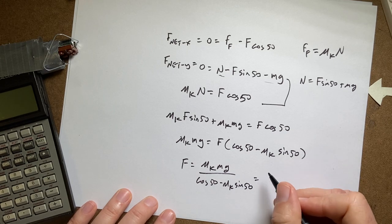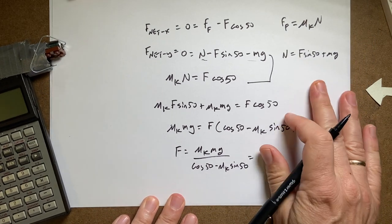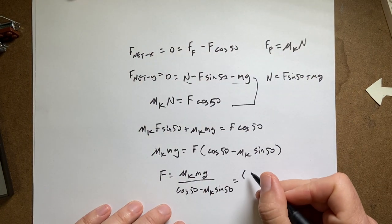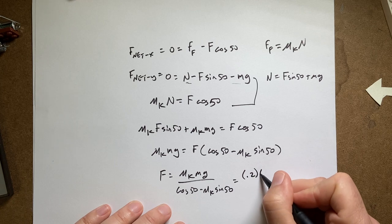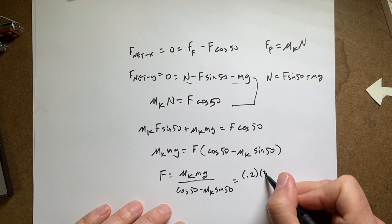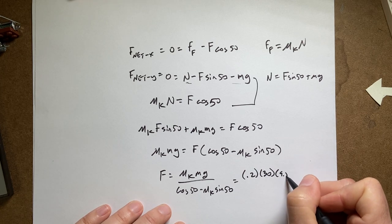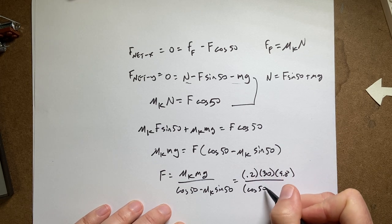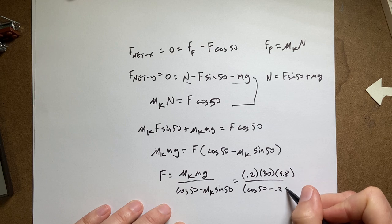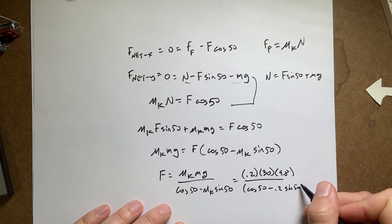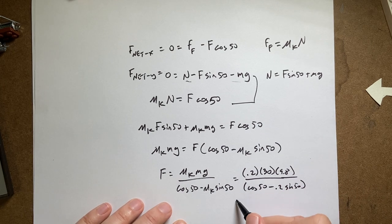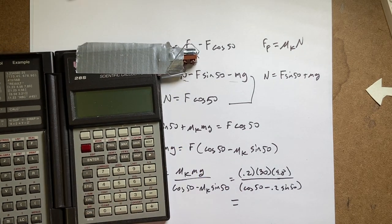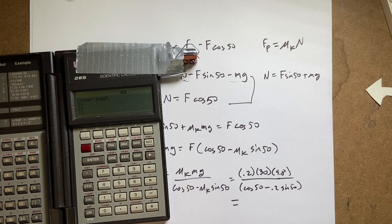So f is going to be equal to mu sub k mg over cosine 50 minus mu k sine of 50. Now let's put in my numbers. I've got my paper crooked. I don't like to get the paper crooked. Okay, so I had mu k was 0.2. The mass was 30. g is 9.8. Then I have the cosine of 50 minus 0.2 times the sine of 50. If I put that in my calculator, let's do that.